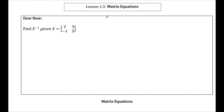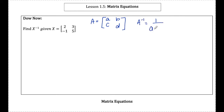So remember, if I have a matrix defined as the matrix ABCD and I want to find the inverse of that matrix, A inverse, I have to do 1 over the determinant of A, which is AD minus BC, times a certain matrix. I find this matrix by switching A and D, and then negating B and C from matrix A.